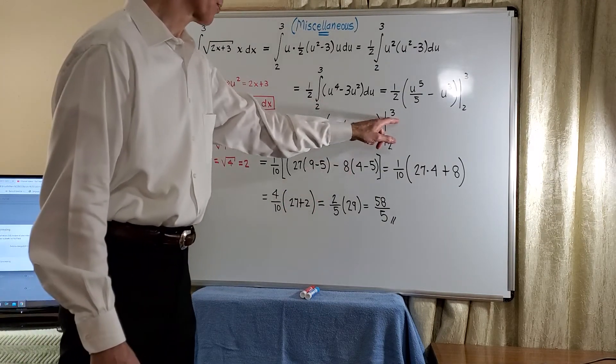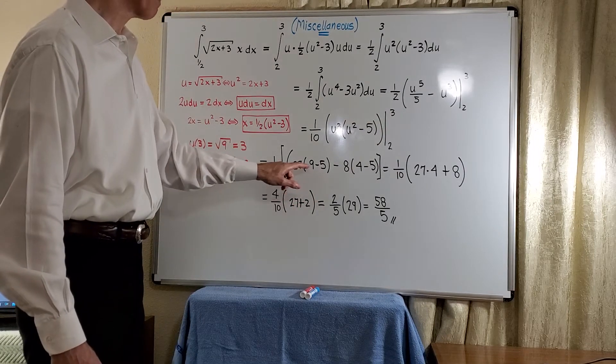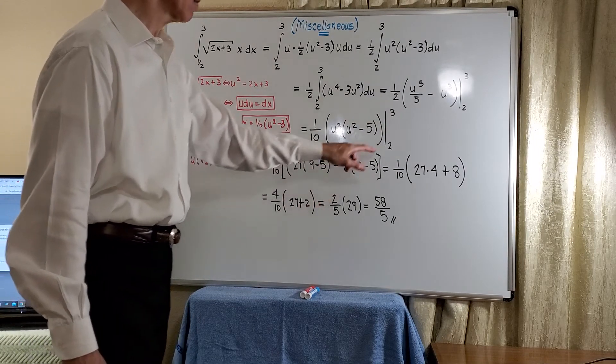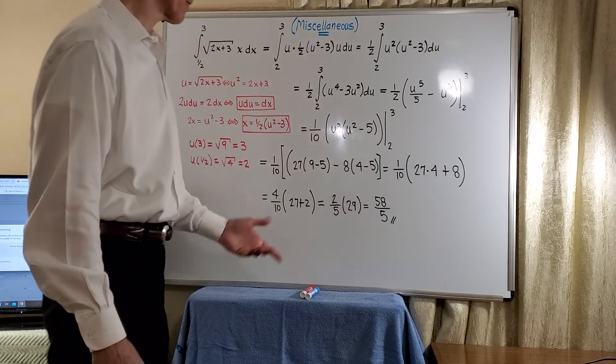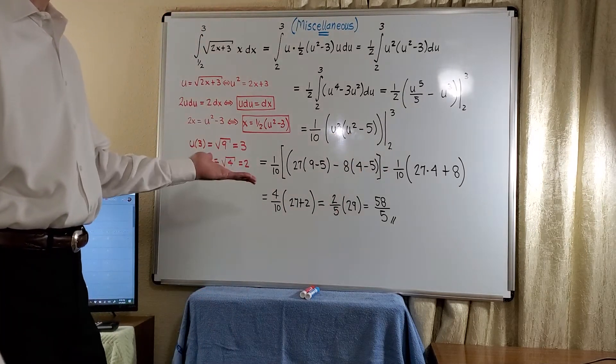So now when we substitute the 3, we get a 27 and a 9 minus a 5. And when we substitute the 2, we get an 8 and a 4 minus a 5. So very simple. And of course, reduce a little.